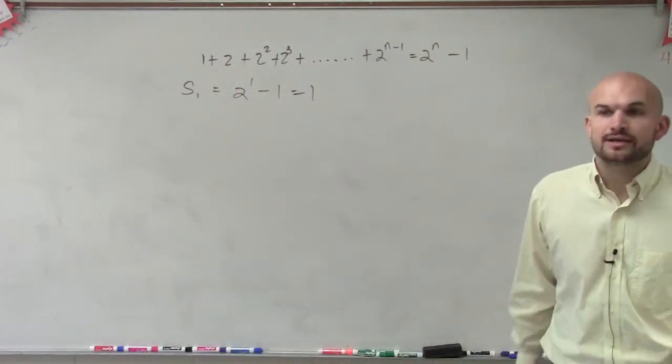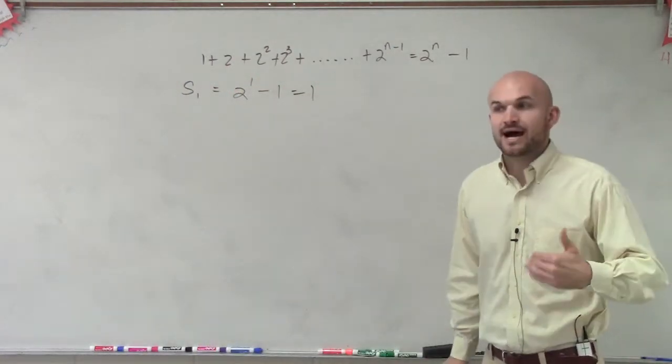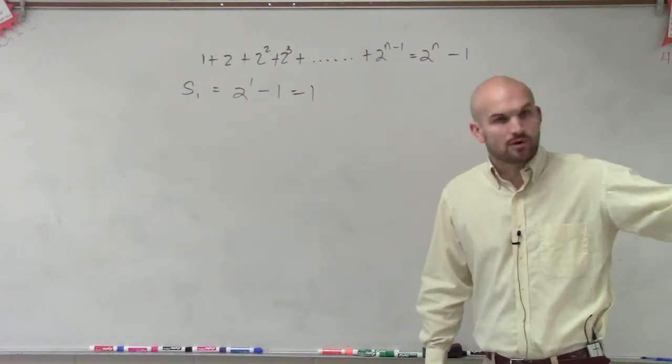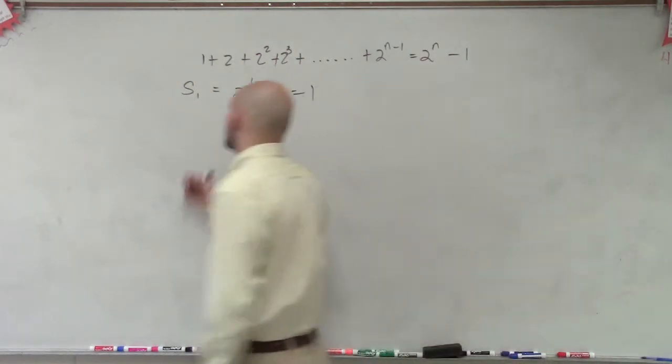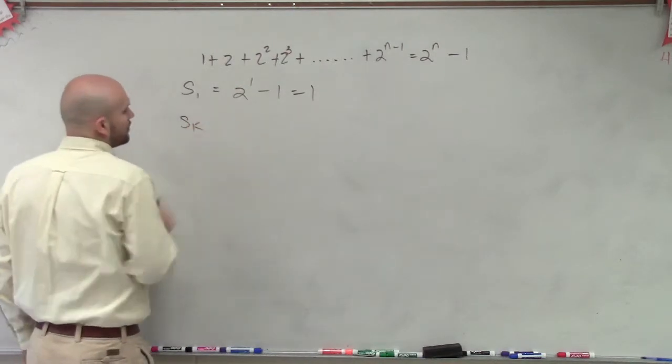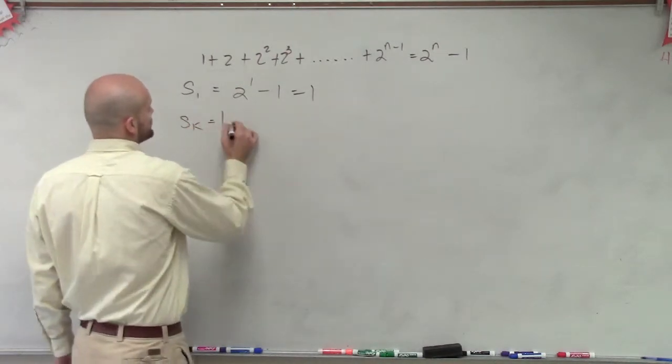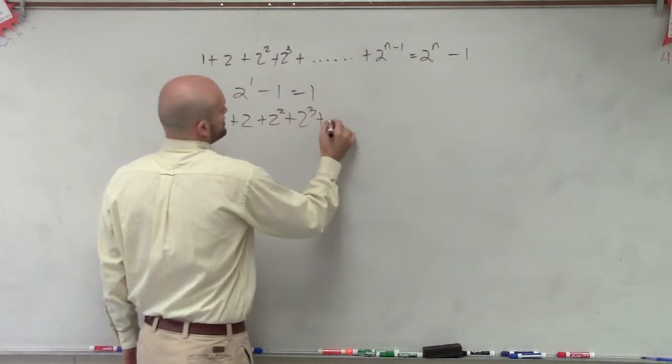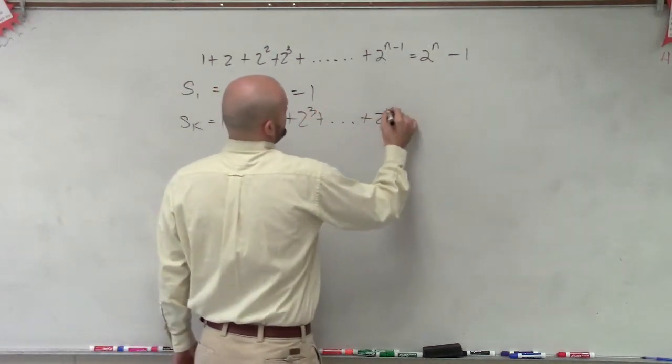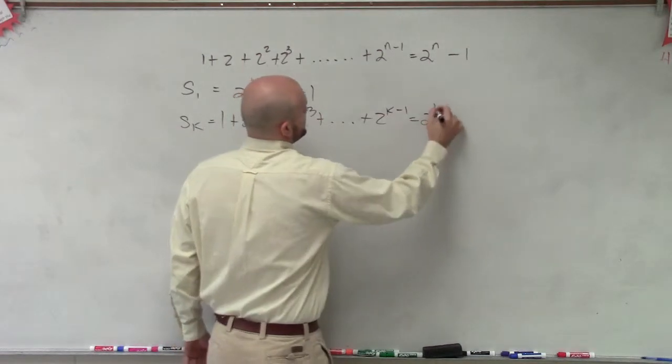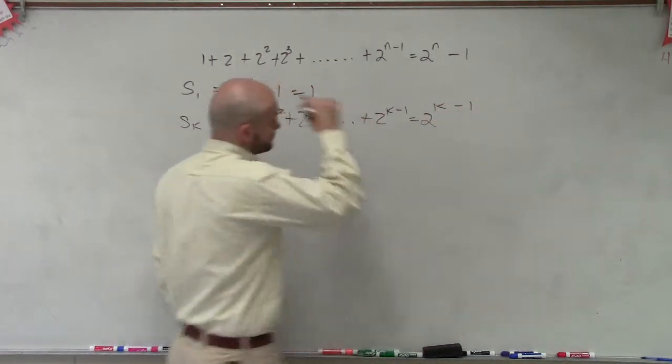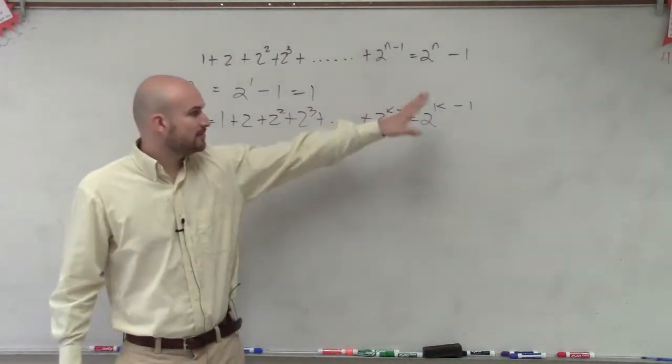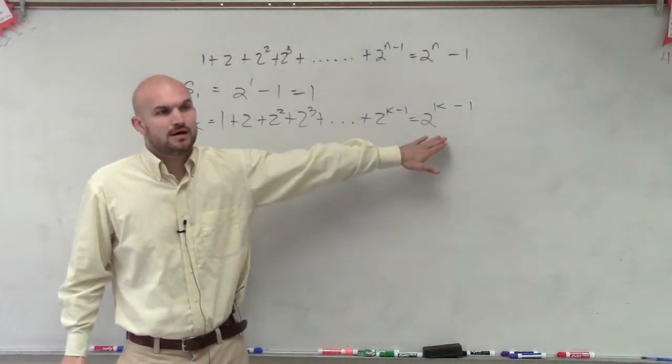Now for induction, what we need to make sure that we do is now prove it for k and then show that k plus 1 is also going to work. So the first thing I'm going to do is I'm going to figure out what S of k equals. So S of k equals 1 plus 2 plus 2 squared plus 2 cubed plus dot dot dot plus 2 to the k minus 1 equals 2 to the k minus 1. So this is just telling me how to get to the next term, and this is telling me the formula for the sum.